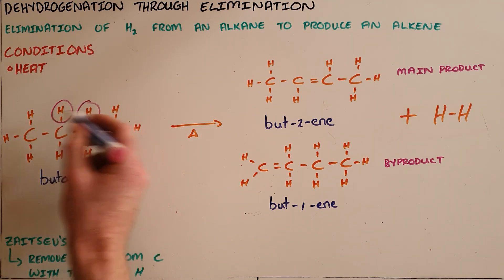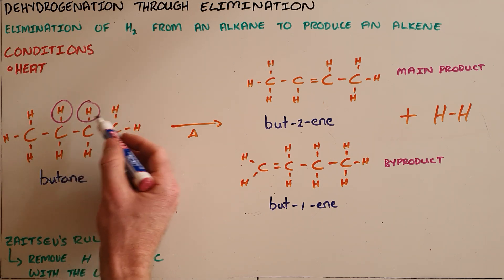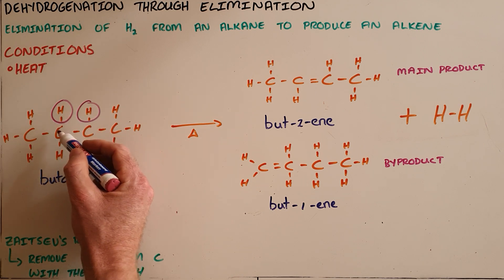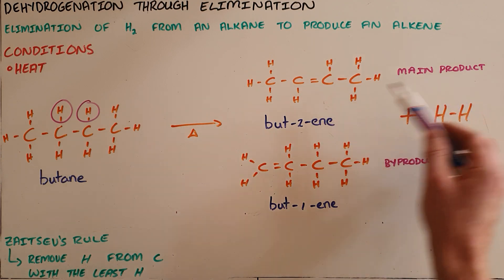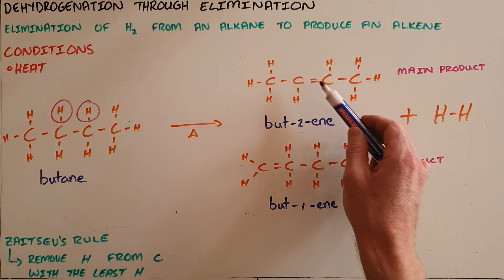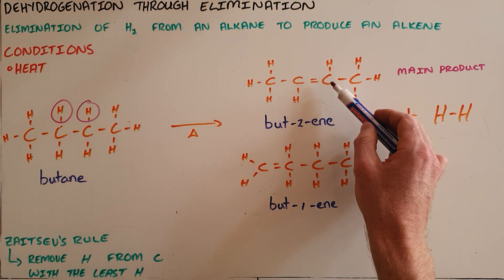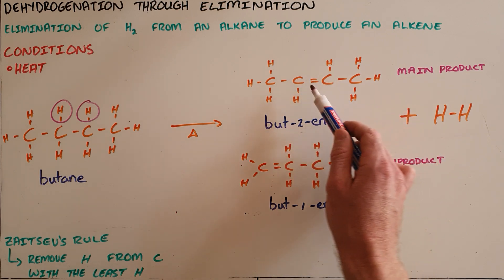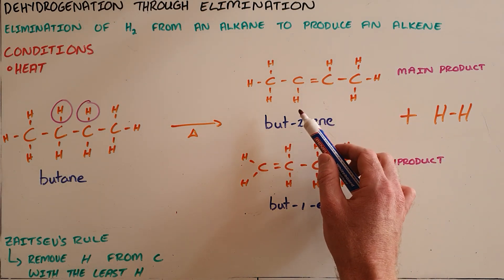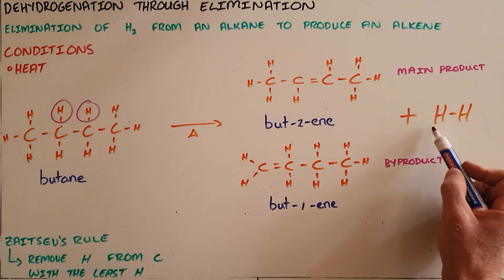Since we must choose two consecutive carbons, we remove the hydrogen from the second and third carbon, which gives us but-2-ene as our main product. Now that these two carbons have lost their hydrogens, they form a double bond with each other, turning this into an alkene, and we also have our hydrogen molecule as a product.